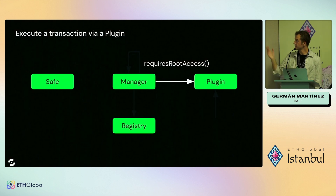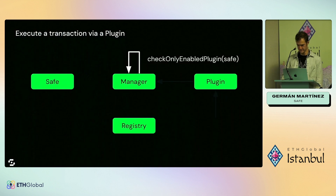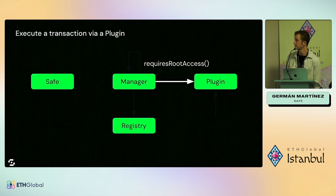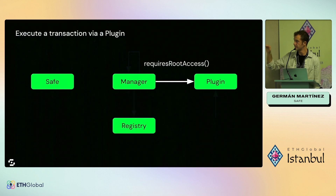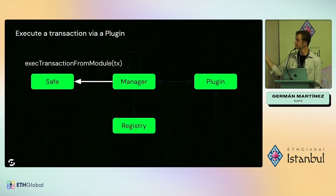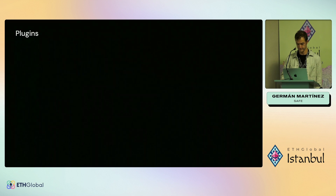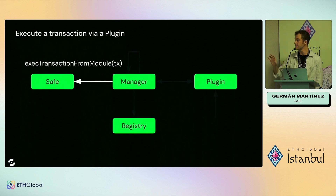With the other approach, it's the responsibility of every SAFE owner to disable that module individually. So the manager checks if the plugin is enabled, if it's added to the registry and not blocked. If everything is okay compared with the information stored in the manager, then the transaction will be sent to the SAFE via the method `exec transaction from module`. That's the main flow between these components.